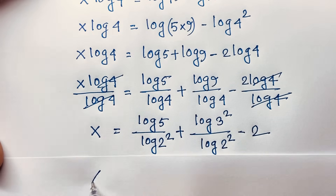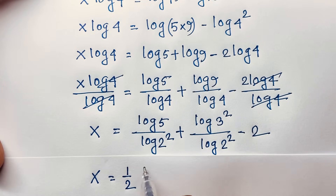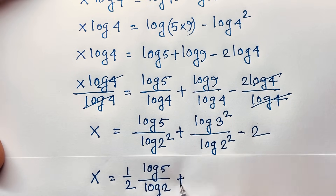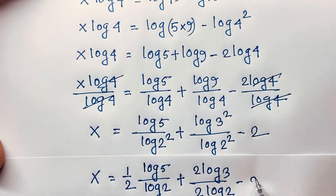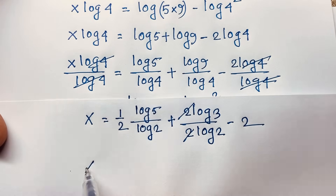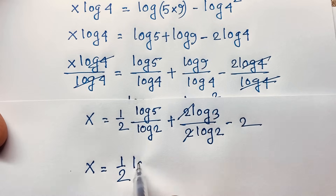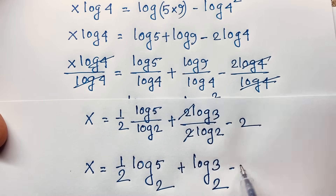Simplifying further, 1 over 2 moves out, giving one-half log 5 base 2. Similarly, log 9 over log 4 becomes log 3 squared over 2 log 2, which simplifies to log 3 base 2. So our final answer is x equals one-half log 5 base 2 plus log 3 base 2 minus 2.